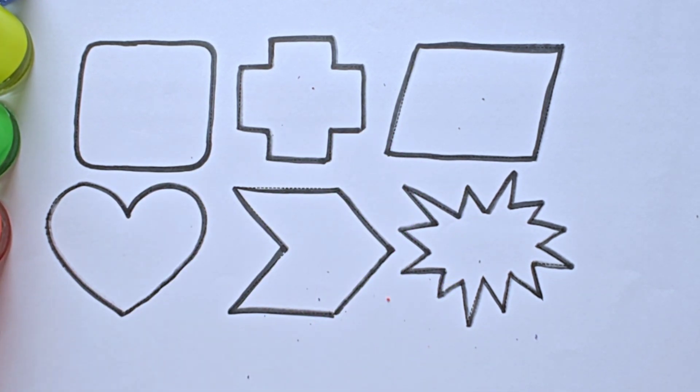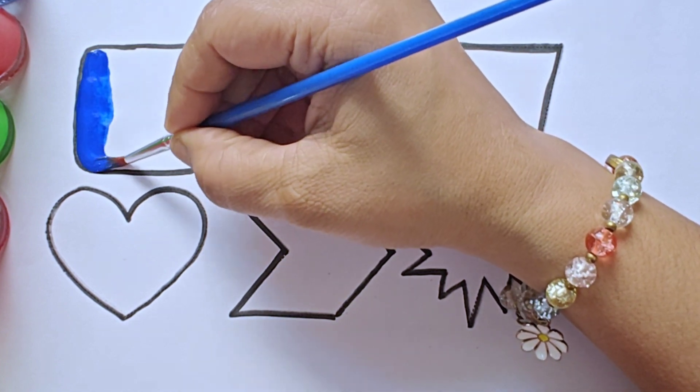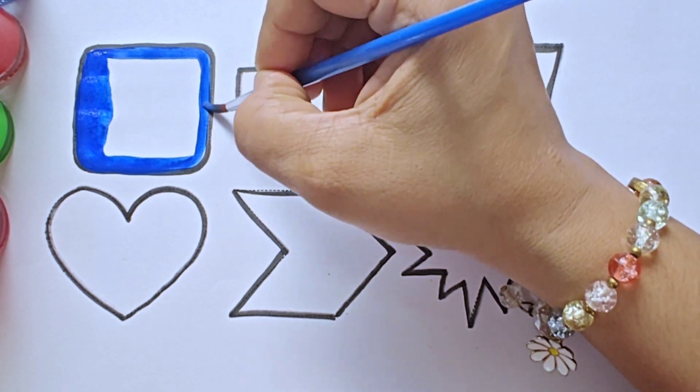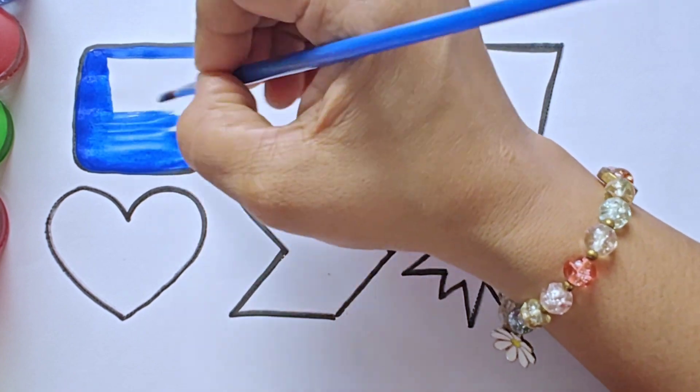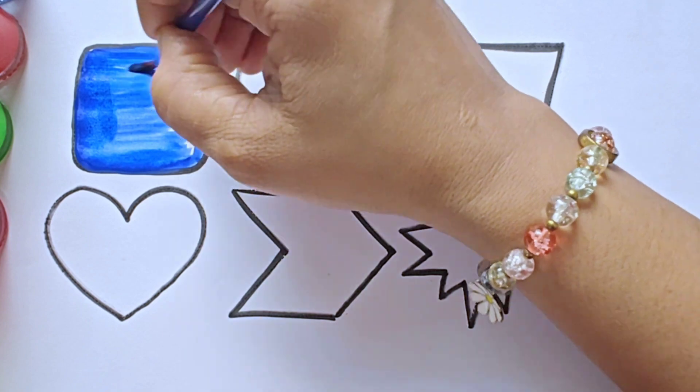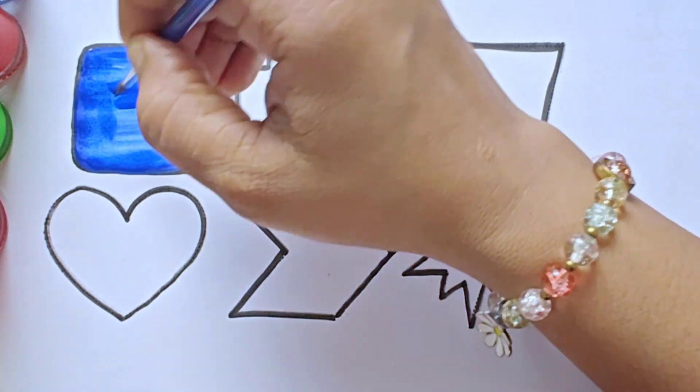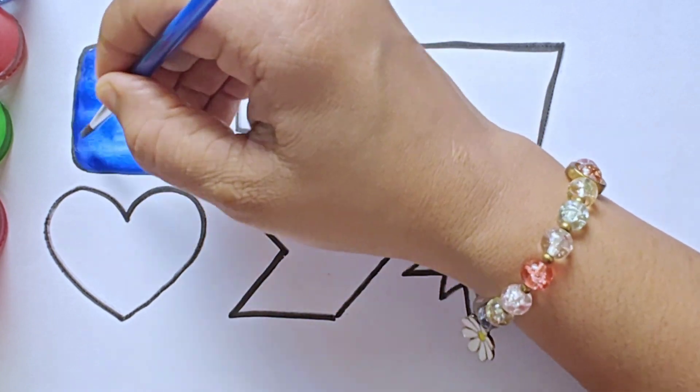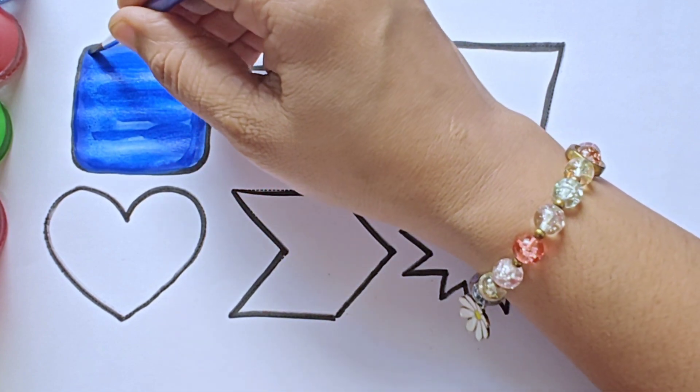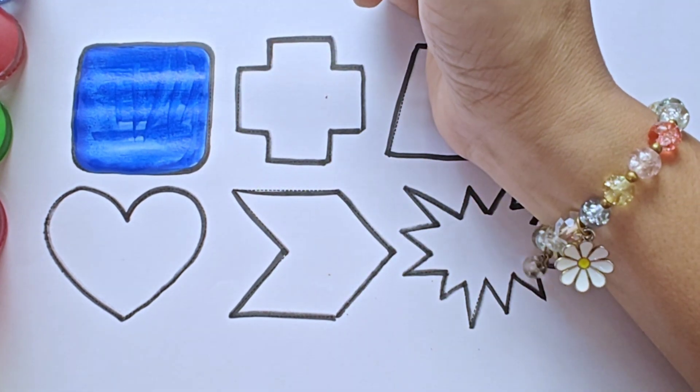Now let us color the shapes. It is blue color. It is rounded corner square or rounded square.